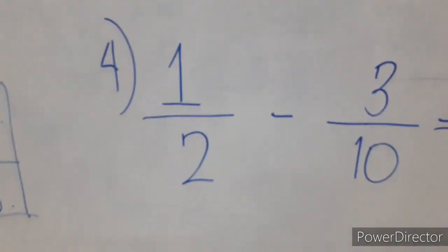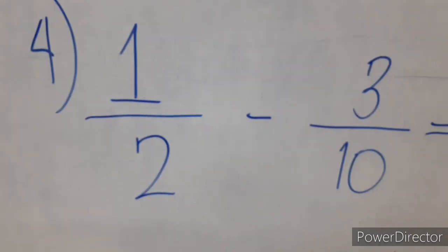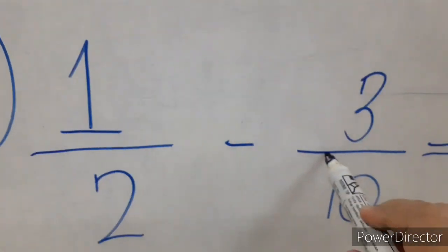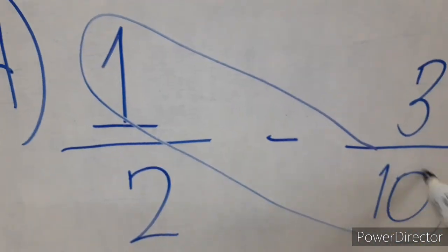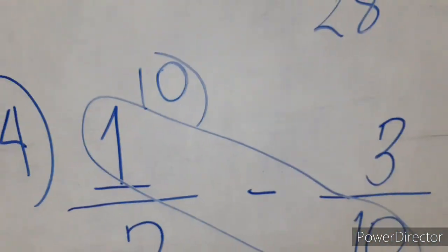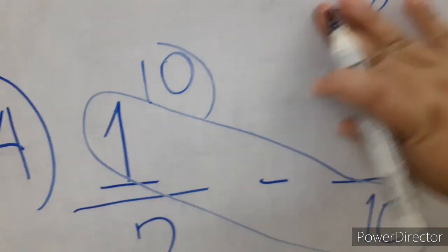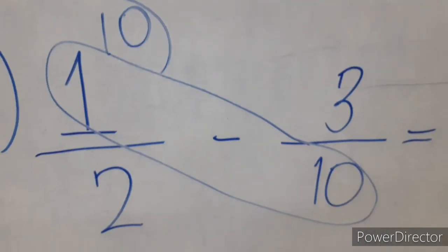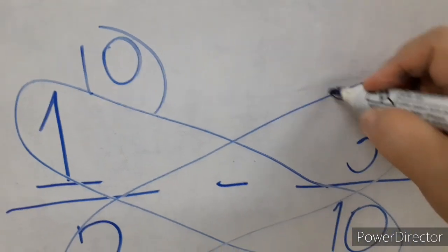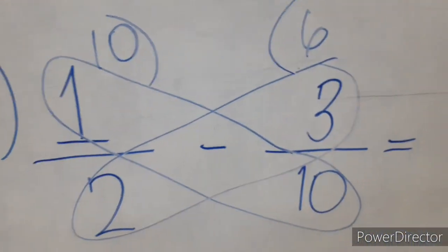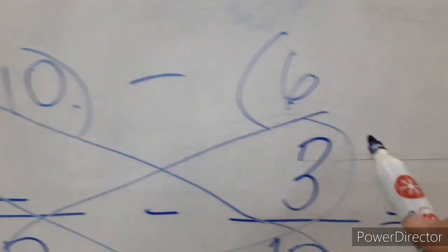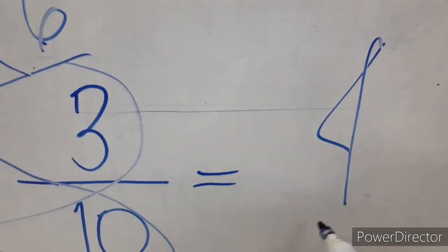Okay, so for our last example, we have here 1 half minus 3 tenths. So we simply have to cross-multiply. 1 times 10 is 10. We put here 10. Next, 3 times 2 is 6. Subtract: 10 minus 6 is 4. So our new numerator is 4.